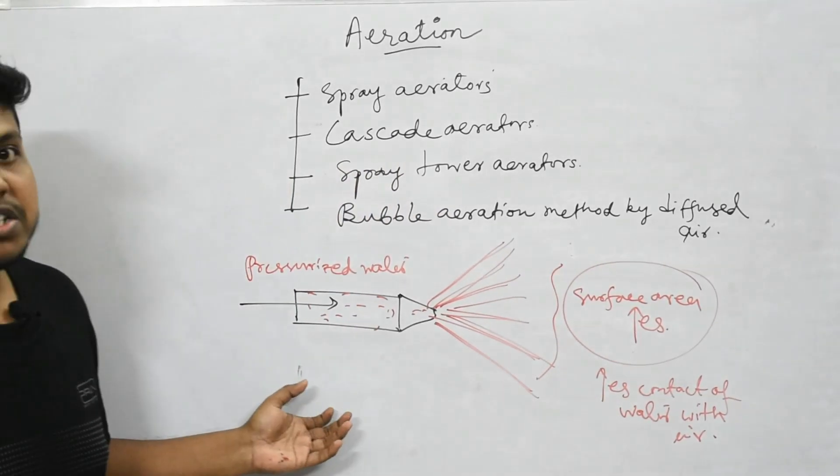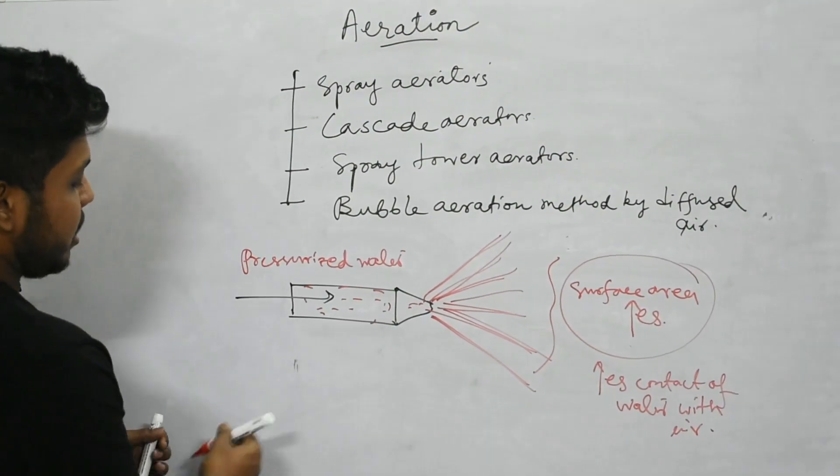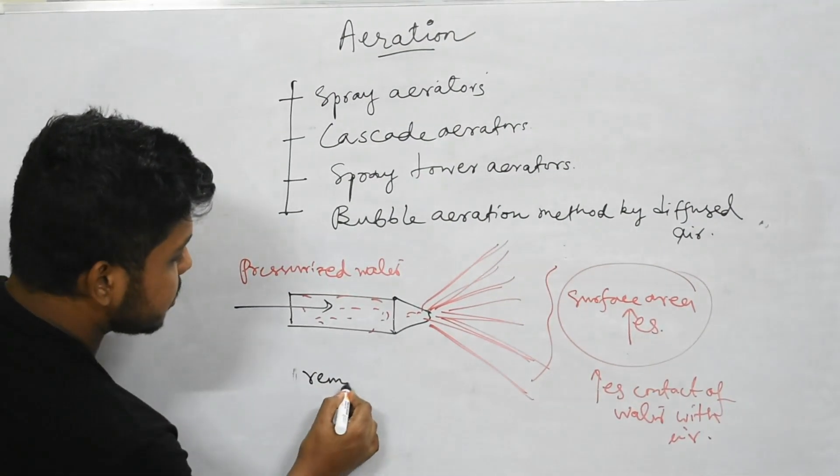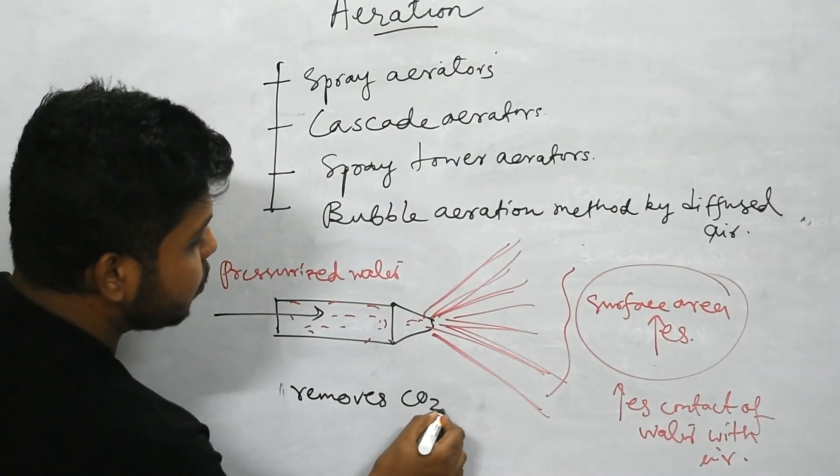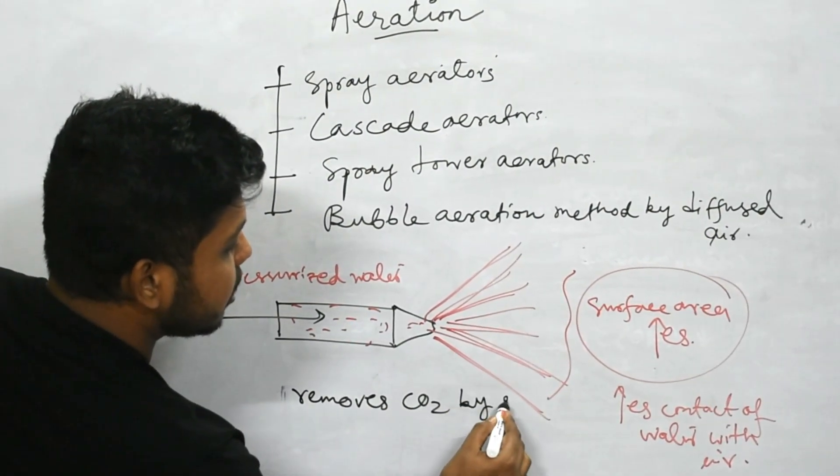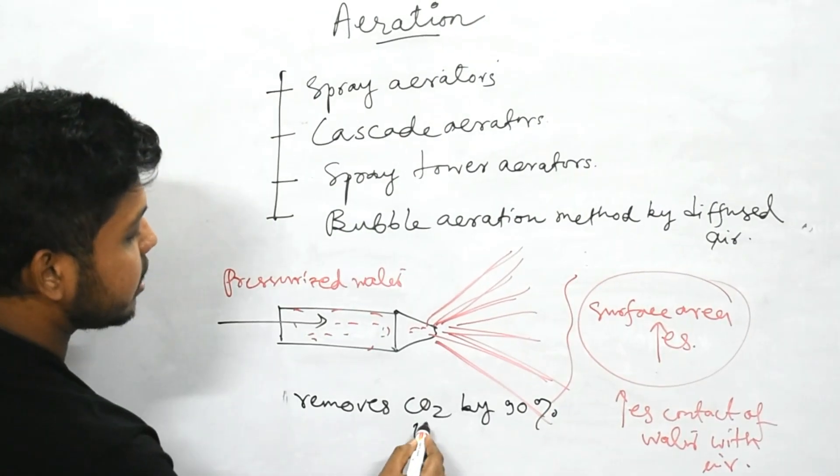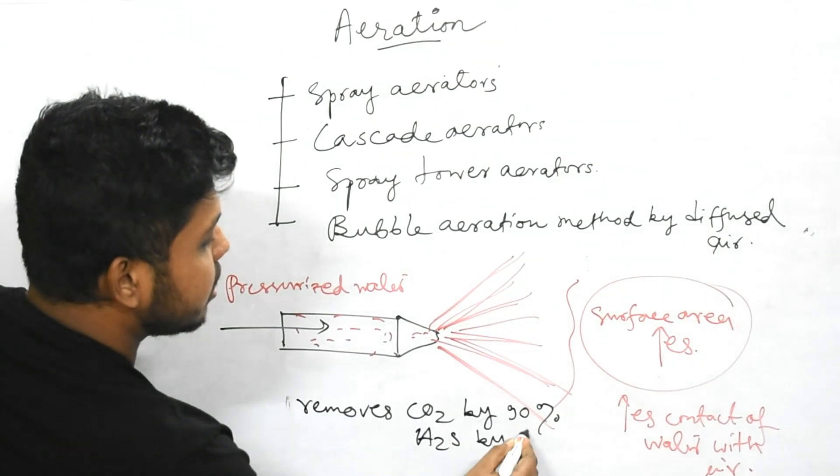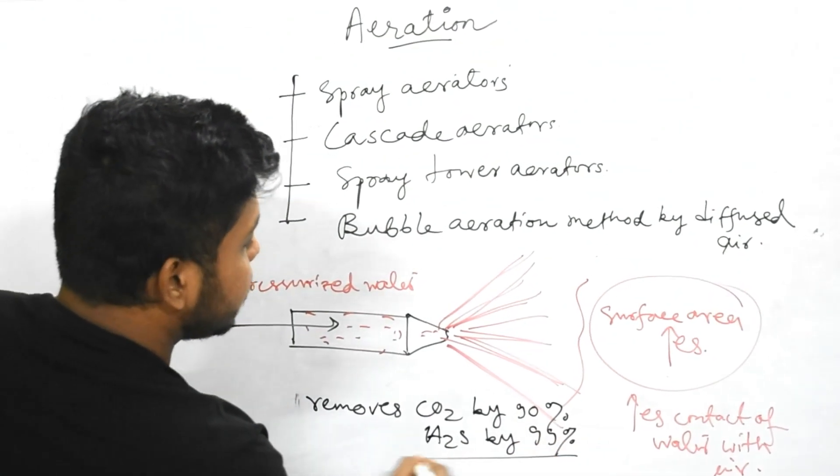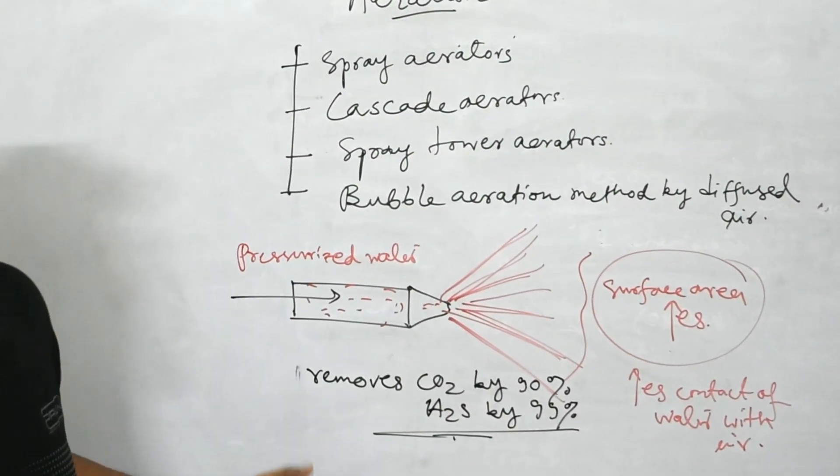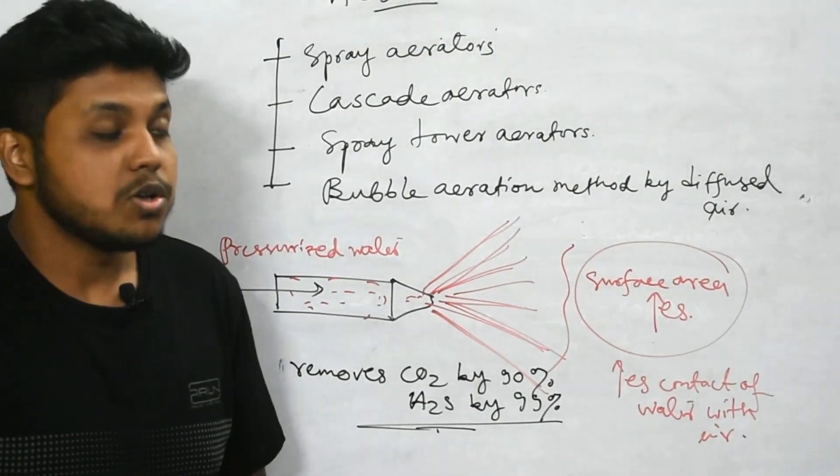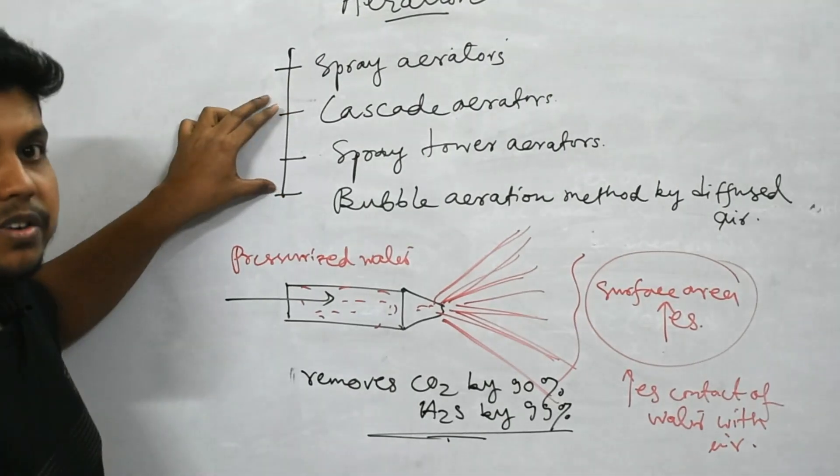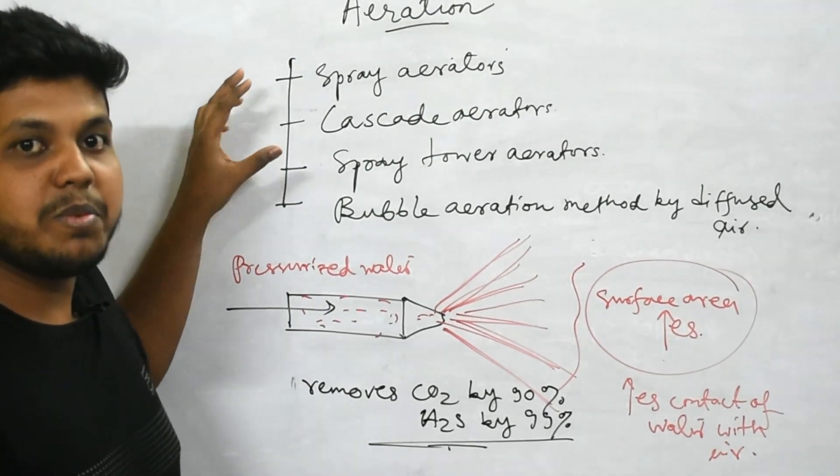The advantage of using spray aerators is it removes CO2 by 90% and H2S by 99%. This is the advantage of having these aerators. We will discuss the rest of three aerators by pictorial representation.